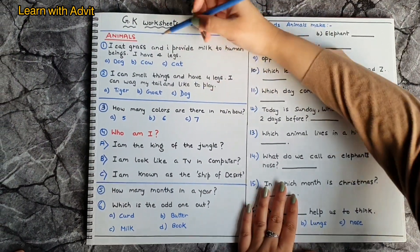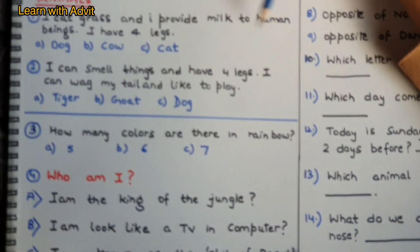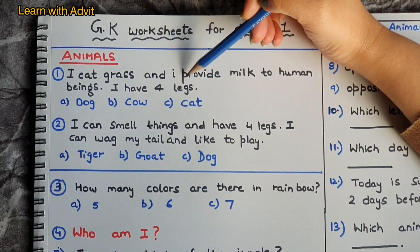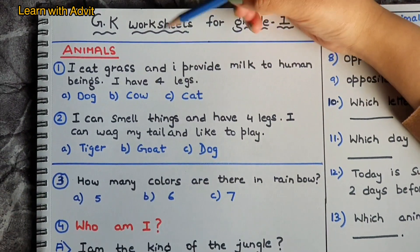I eat grass and I provide milk to human beings. I have four legs. You have to guess the animal: dog, cow, or cat? Cow, because cow gives us milk.